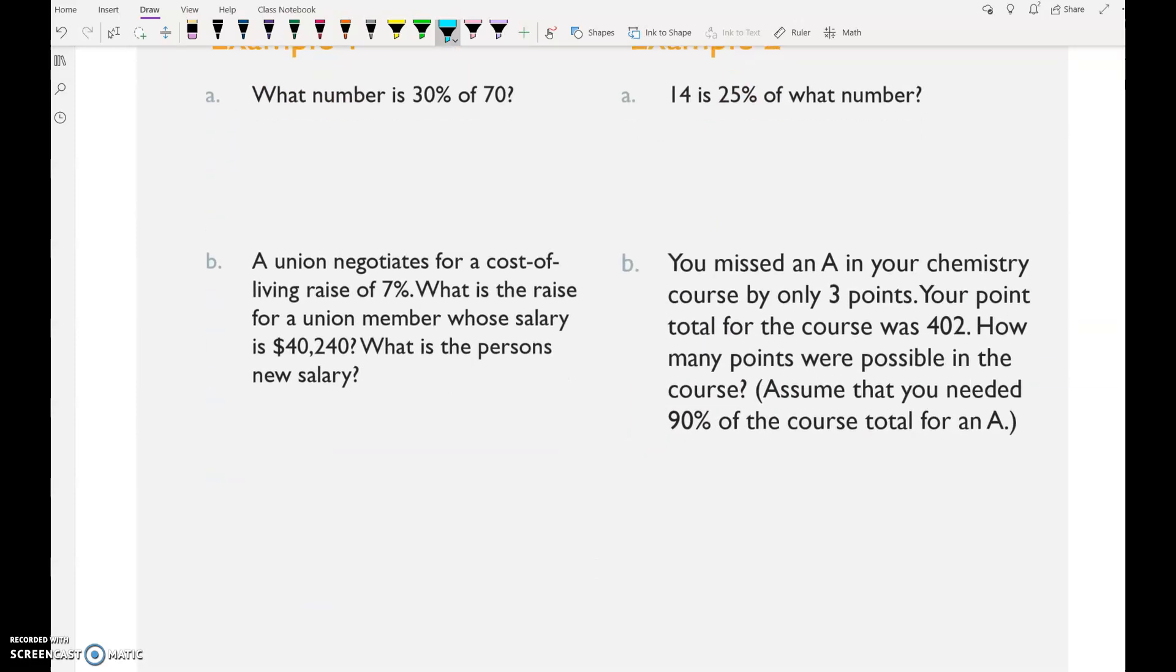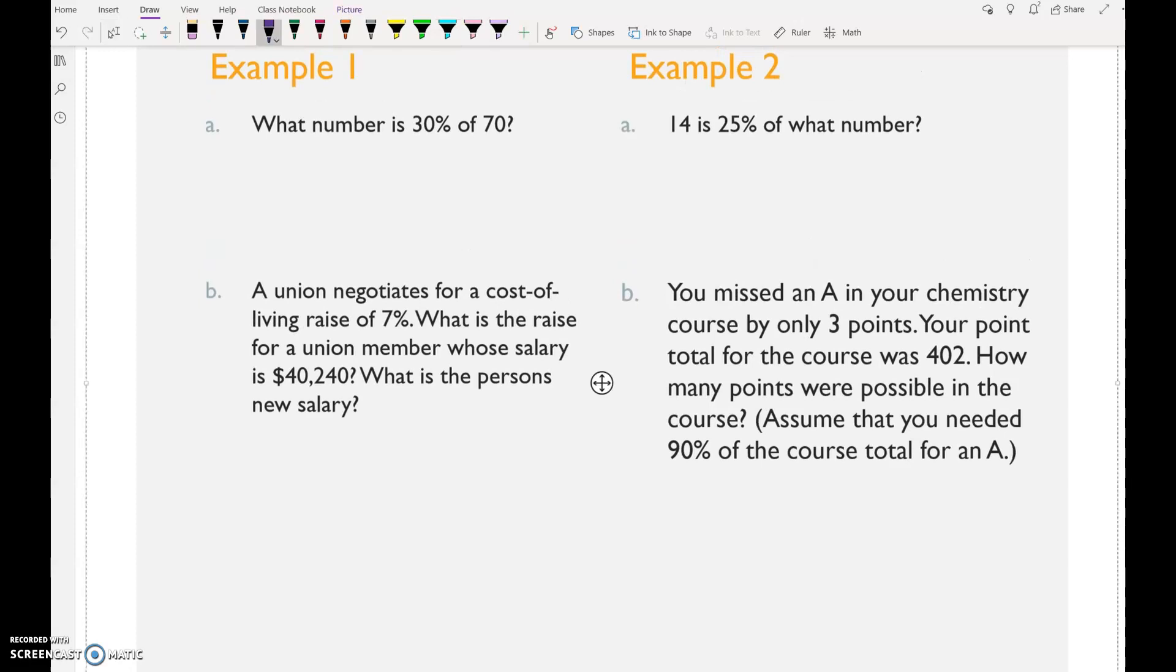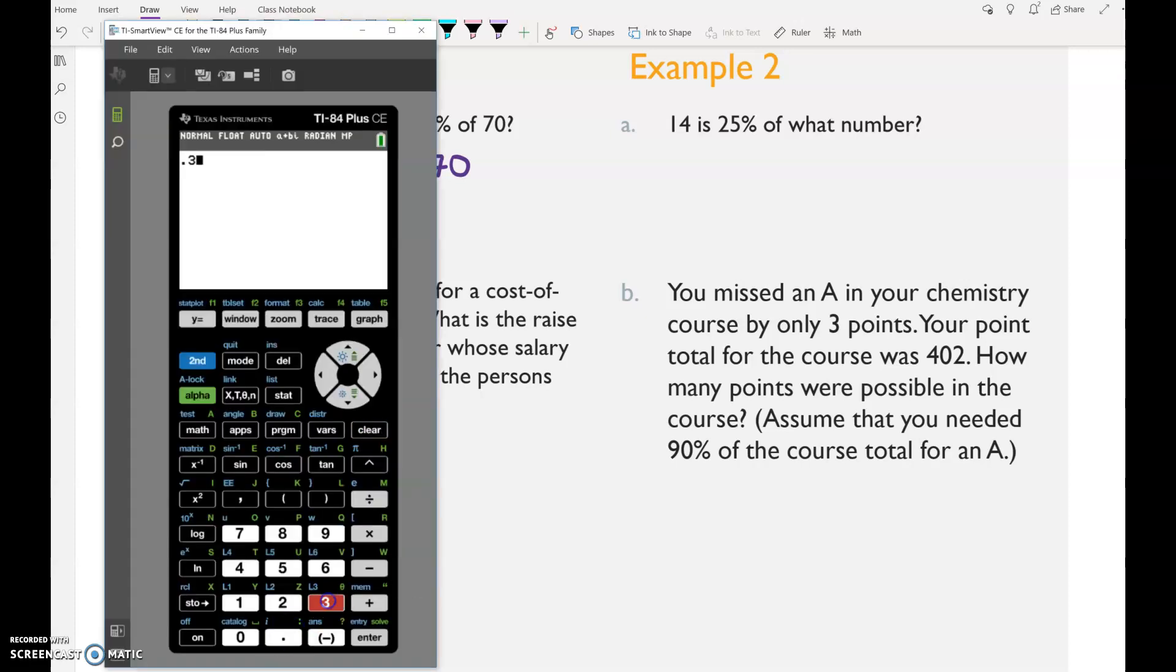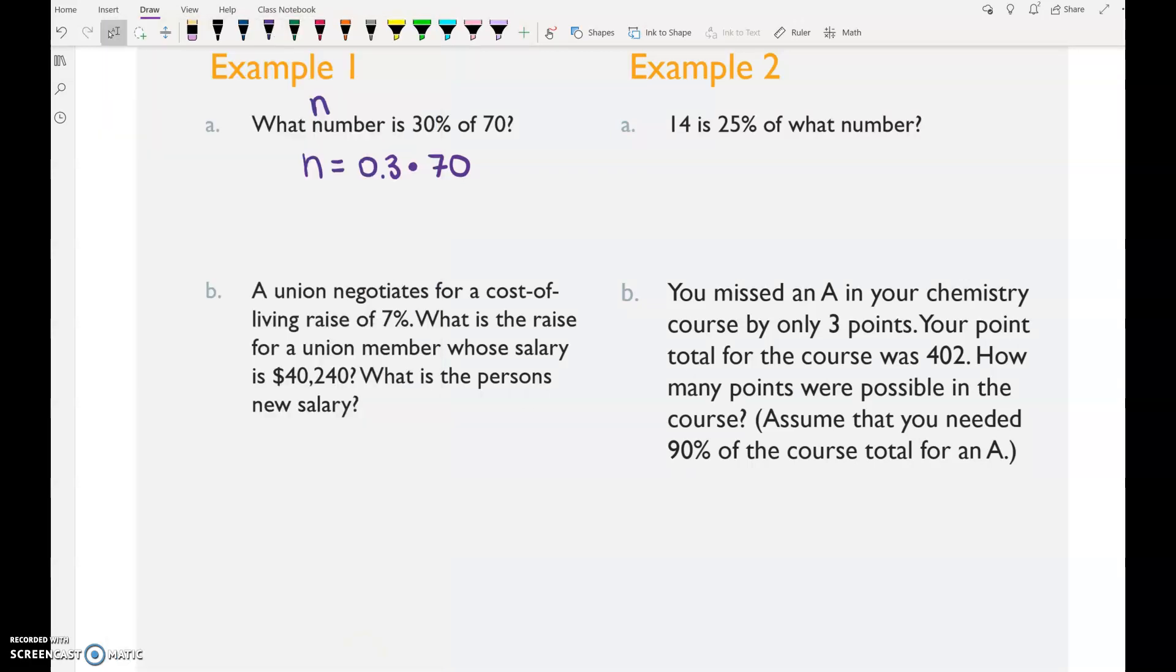So first example. What number is 30% of 70? So we can use N for what number. Is means equals, 30% - how do we write 30% as a decimal? 0.3. Of means multiply 70. If you translate the words into a mathematical sentence, now we just have to figure out how to get N. So in this case we do 0.3 times 70. What do you get when you do 0.3 times 70? 21. 21 is 30% of 70.